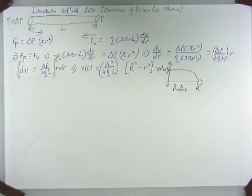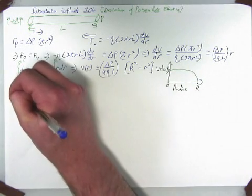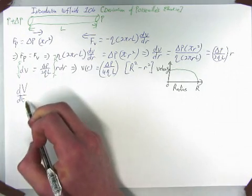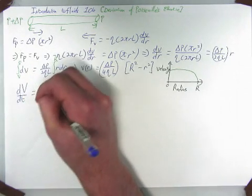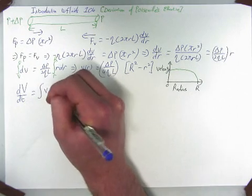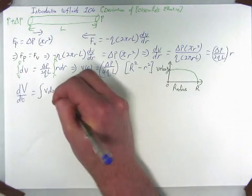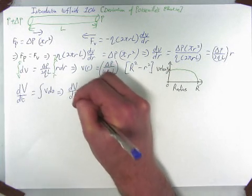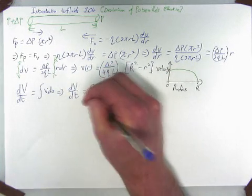Now, if we use the equation of continuity, which is change in volume over change in time, dV/dt equals the integral of velocity times area. Therefore, we have change in volume over change in time equals the integral...